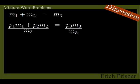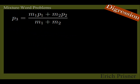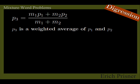If we divide equation number 2 by M3, substitute M3 by M1 plus M2 according to equation 1, and use commutative law, we get P3 equals M1 times P1 plus M2 times P2 divided by M1 plus M2. Meaning that the resulting concentration P3 is a weighted average of the concentrations P1 and P2 of the ingredients.